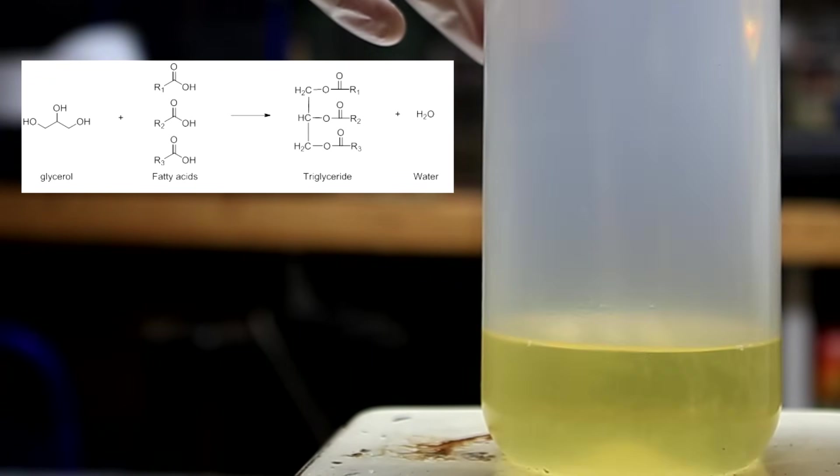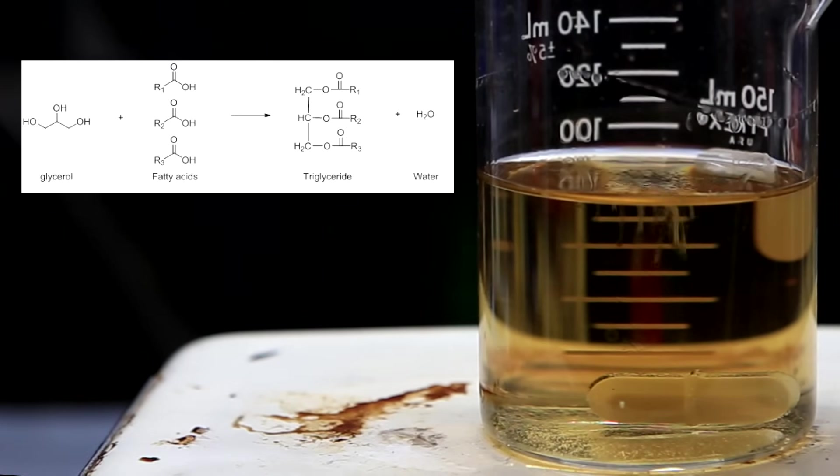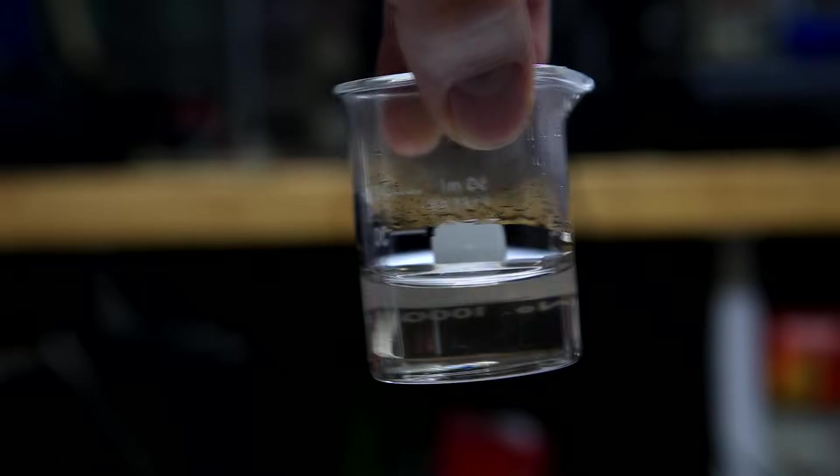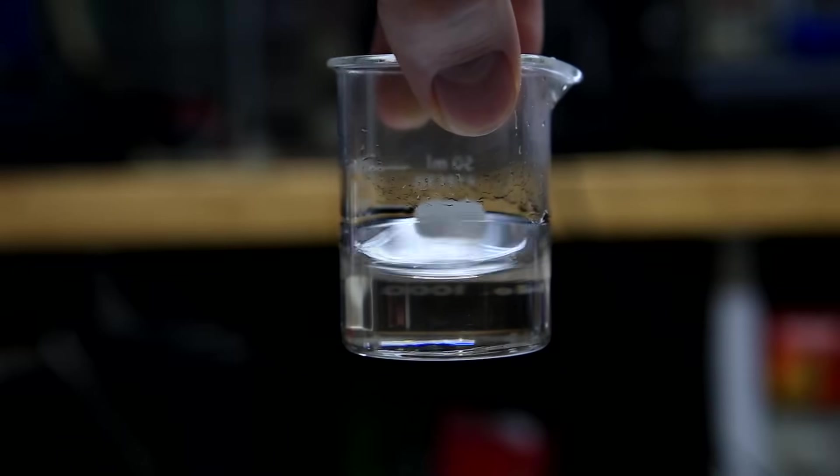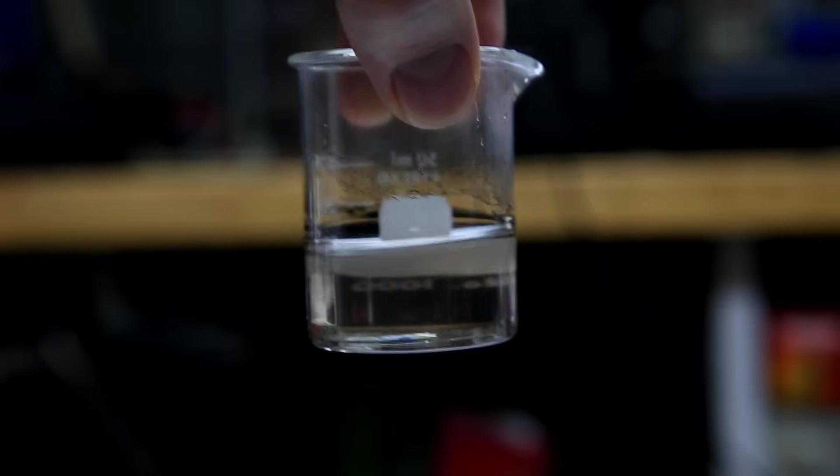The glycerol serves as a backbone and links to three different fatty acid molecules. The combination of the three fatty acids and the glycerol backbone is known as a triglyceride. The goal of this experiment is to break apart triglycerides, which are a major component of vegetable oils, and to recover the glycerol backbone.